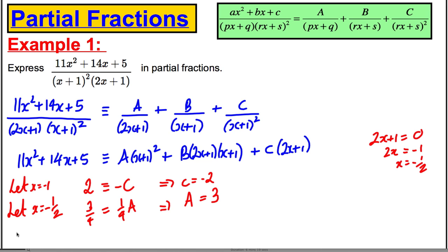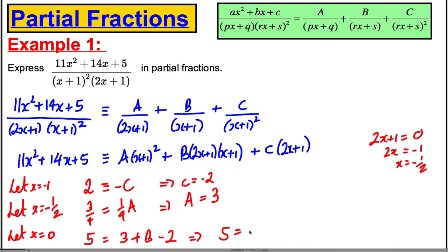Lastly, nothing else eliminates cleanly, so let's choose something simple like x equals zero. The left side gives five. The A term gives three (since A = 3). The B term gives just B. The C term gives C, which we know is negative two. So we have five equals three plus B minus two, which gives five equals one plus B. Therefore, B equals four.